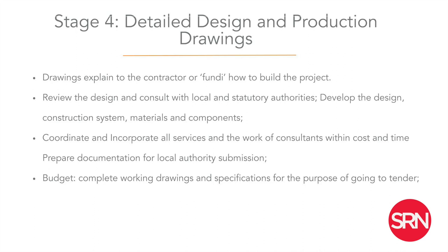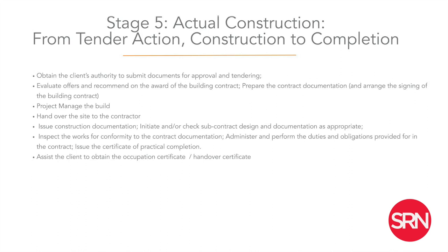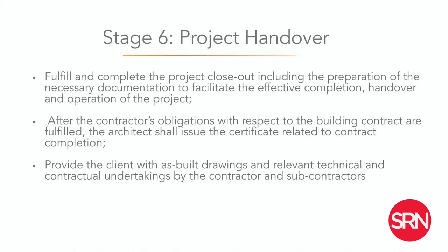Stage five covers tender action through to construction and completion. The architect obtains authority from the client to submit documents for tendering, evaluates contractor offers, and recommends award of the contract. All documentation required to enable the contractor to build is arranged at this stage. The architect then hands over the site to the contractor and supervises it, acting as project manager for day-to-day site activities. Finally, when the building is complete, it is handed over to the client with all necessary documentation to facilitate proper use of the building.